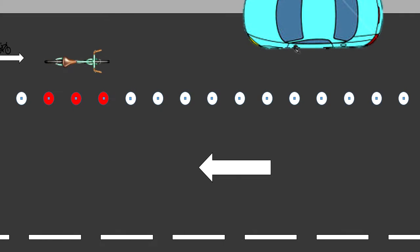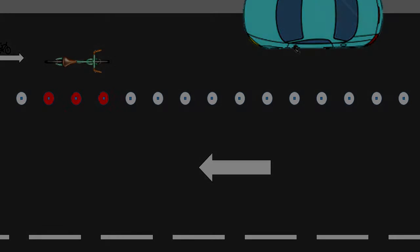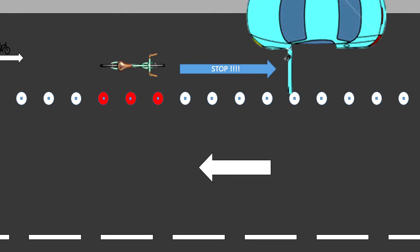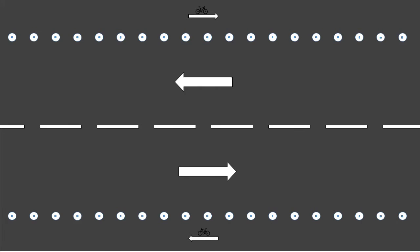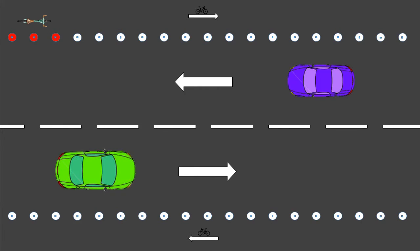Our second improvement is about the organization of the road. We want to reverse the direction of the bicycle lane to allow car drivers parked on the side of the road to see cyclists and avoid collision with car doors. This modification will also help solve the blind spot problem.